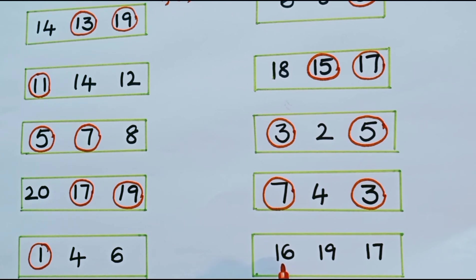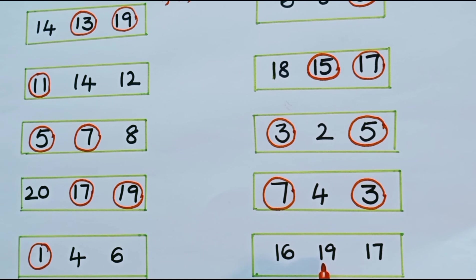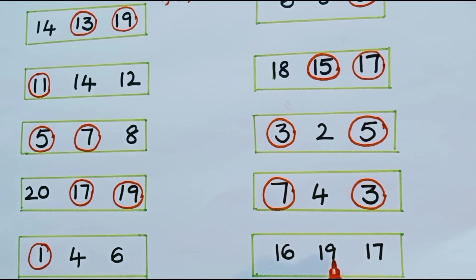What are the numbers in the next row? 16, 19, and 17. Is 16 odd or even? 16 is an even number, so we should not circle it. Is 19 odd or even? Look at the ending number in 19 — it is 9. 9 is an odd number, so 19 is also an odd number. Let us circle 19.